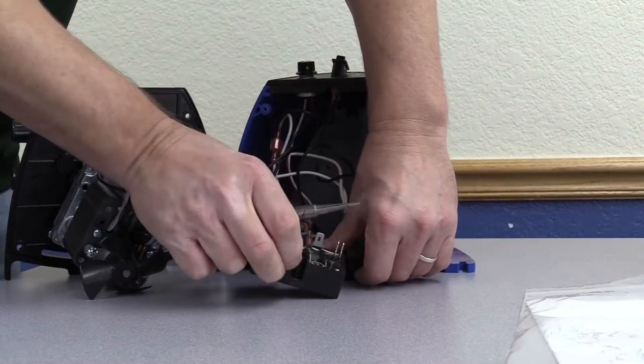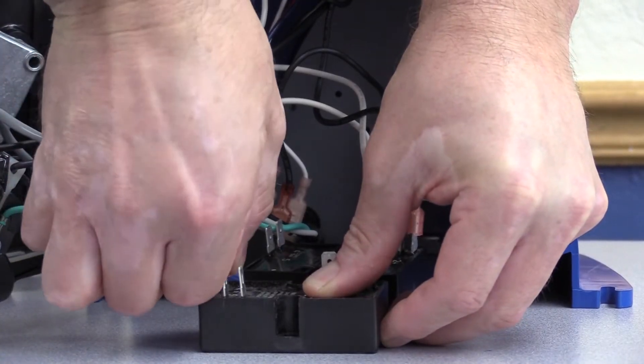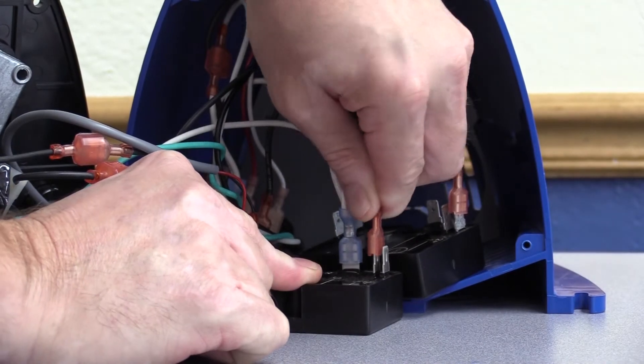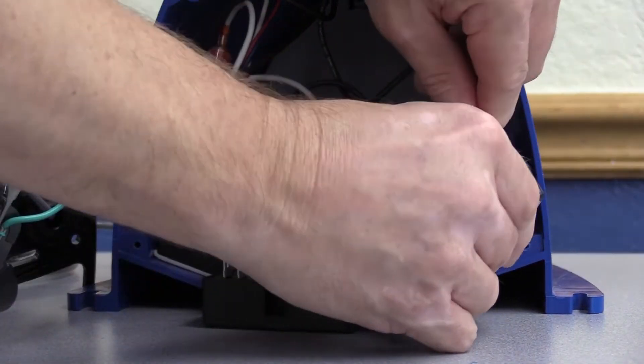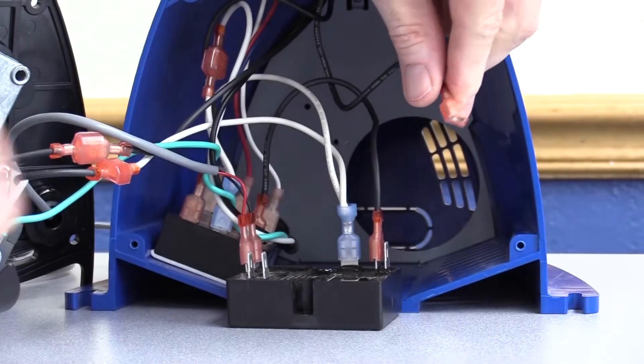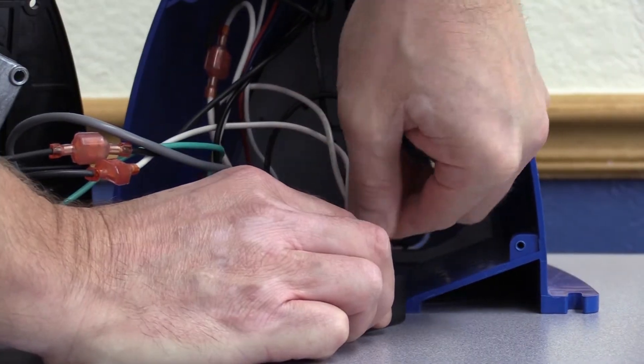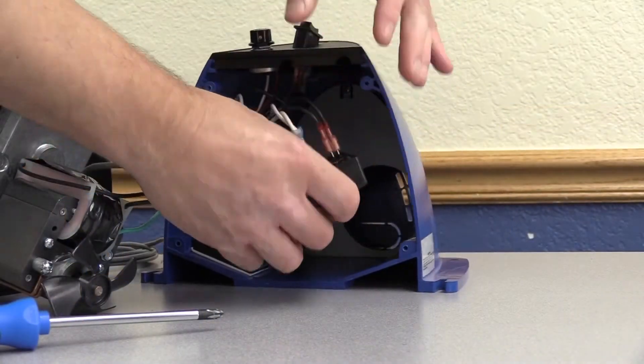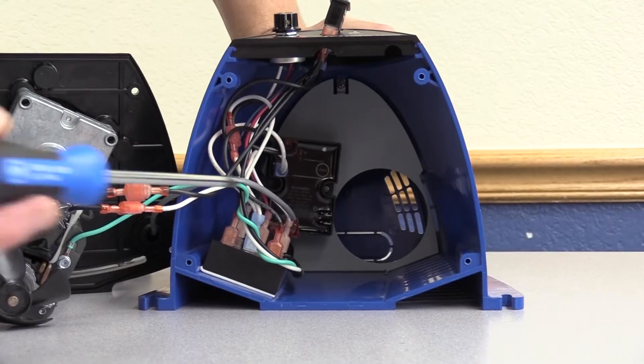Remove wire connections one at a time from the old timer module to the new timer module. The wires will go to the same numbered spade connectors on the new timer module as the old timer module. The spade connectors on the new module may be in a different orientation. Fasten the timer module to the baffle with screws.